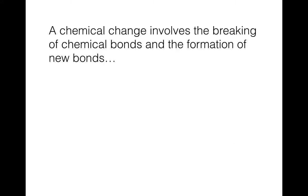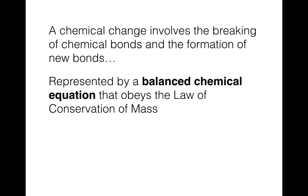A chemical change involves the breaking of chemical bonds, and we've learned about chemical bonds, so we'll be breaking those bonds and forming new bonds in a chemical reaction. That's the definition of a chemical reaction, and we represent this using a balanced chemical equation. They obey what's called the law of conservation of mass, which means the mass of everything on the left side of the reaction is going to be equal to the mass of everything on the right side — before and after, the mass will be the same.